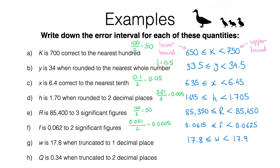For the last question, the answer is: q could equal 0.34 exactly, so we write 0.34 ≤ q < 0.35. Notice the difference between the lower and upper bound is one hundredth, which is what we're rounding to when we say two decimal places. And in question g the difference was one tenth, corresponding to one decimal place.